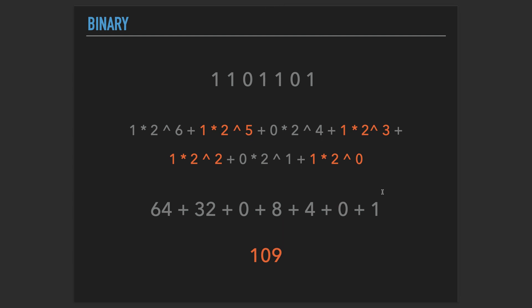We can do this for binary numbers as well. Consider the number 1101101 in binary. Can we convert this from binary into decimal form? Of course we can. We multiply each digit by powers of two — two to the power one, two to the power two, two to the power three, and so on — rather than using ten as a base, because in binary we only have two numbers: one and zero. In decimal we have ten numbers, from zero to nine. If you multiply everything with the powers and sum it all together, 1101101 in binary equals 109 in decimal.